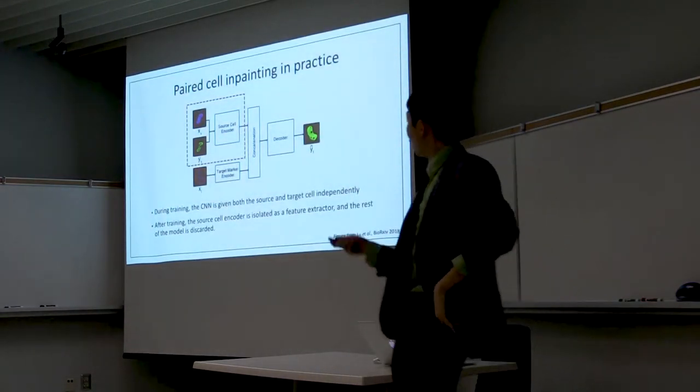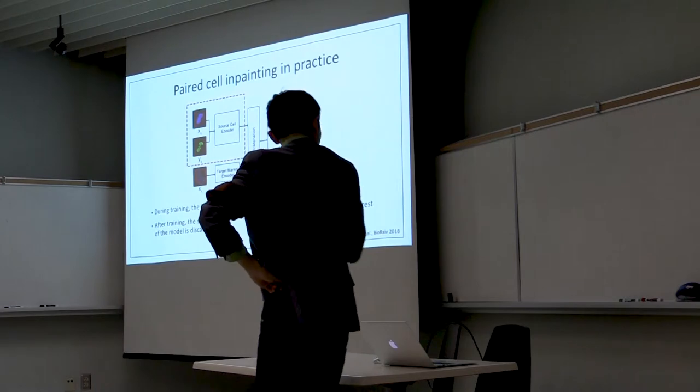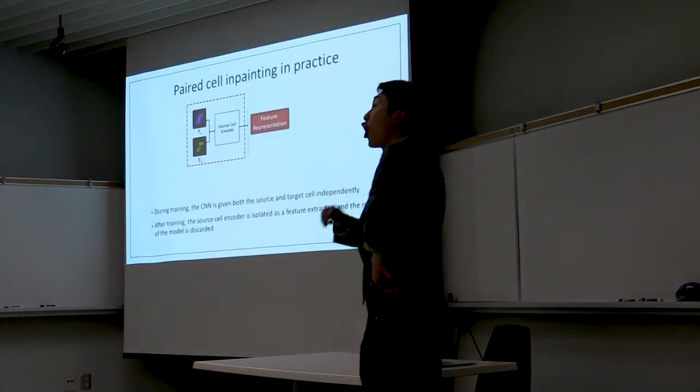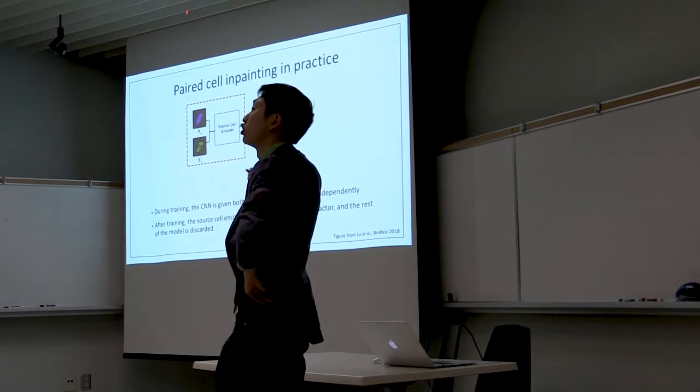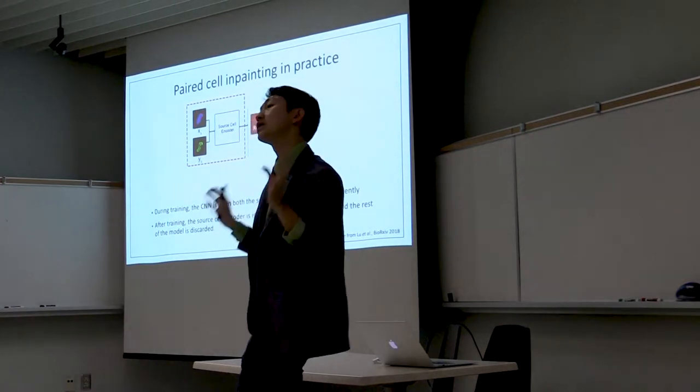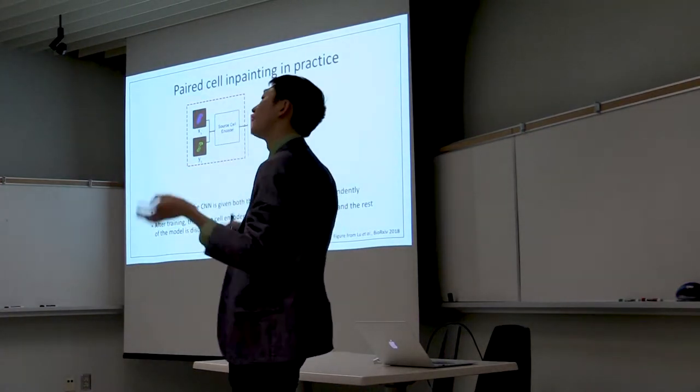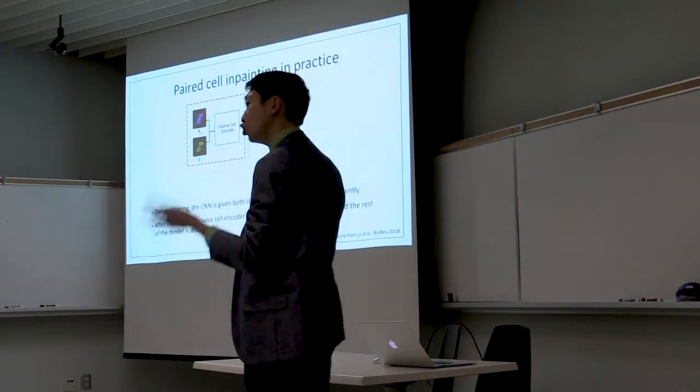After training, we're going to isolate the source cell encoder, and then we're going to toss away the rest of the network, and then we're just going to use the source cell encoder to extract features. So that is how we get unsupervised single cell features using our model.